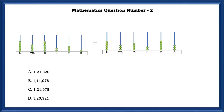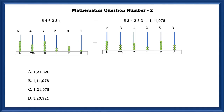Mathematics question number 2. They have given an abacus and they have told to subtract. First, we will find the numbers in the abacus. After finding the numbers, we have to subtract, which will give us 1,11,978.